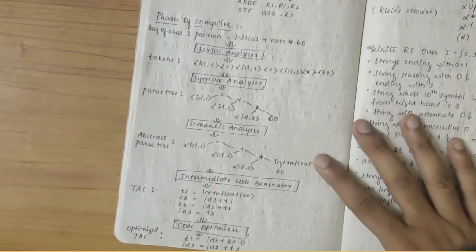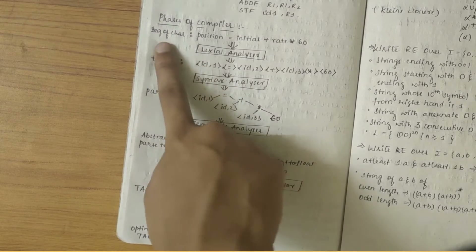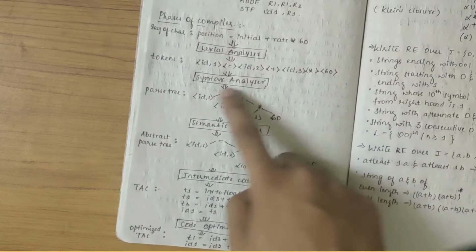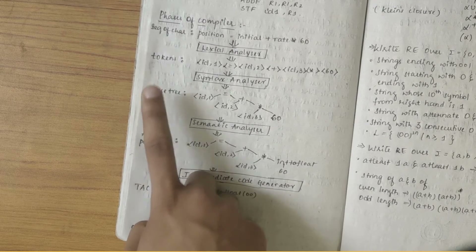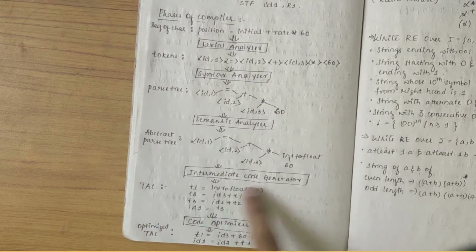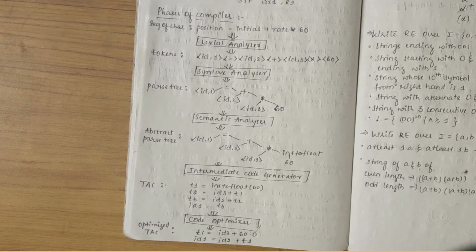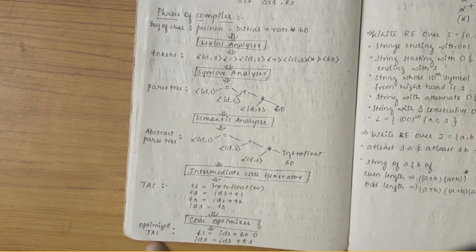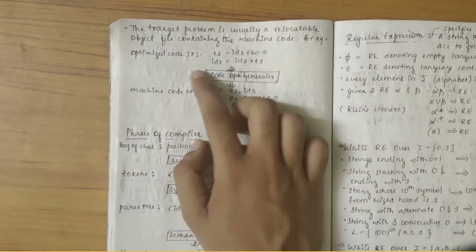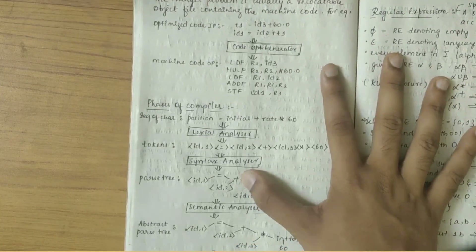To summarize how the phases of compiler work using one particular example: sequences of characters are fed as input to the lexical analyzer, which outputs tokens. Tokens are fed to the syntax analyzer, producing a parse tree. The parse tree is fed to the semantic analyzer, producing an abstract parse tree. This is then fed to the intermediate code generator, producing three-address code. Since three-address code is lengthy and requires more space and time, it is fed to the code optimizer, producing optimized three-address code.